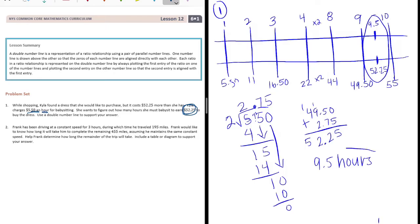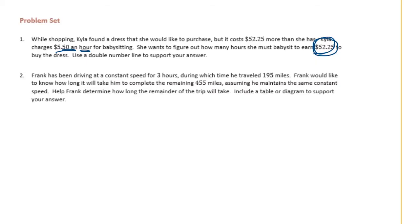Number two. Frank has been driving at a constant speed for three hours, during which time he traveled 195 miles. Frank would like to know how long it will take him to complete the remaining 455 miles, assuming he maintains the same constant speed. Help Frank determine how long the remainder of his trip will take. Include a table or diagram to support your answer. Okay, so every three hours he travels 195 miles and we want to know how long it's going to take him to go 455 miles. Let's make our double line graph.